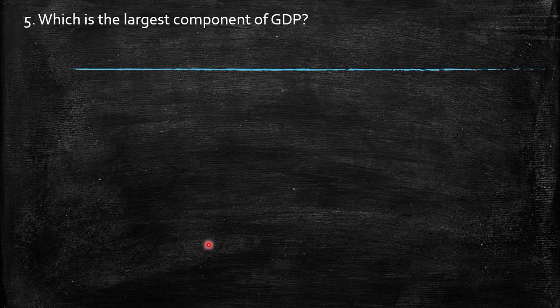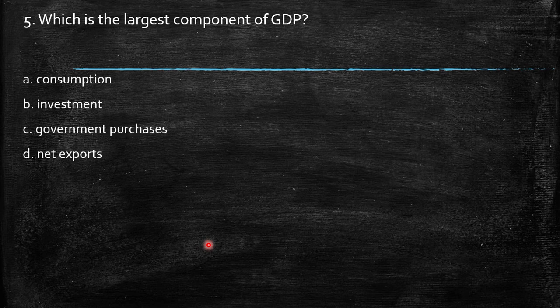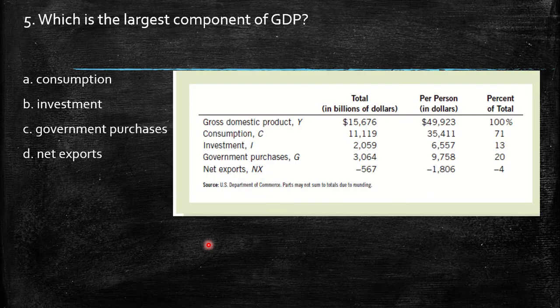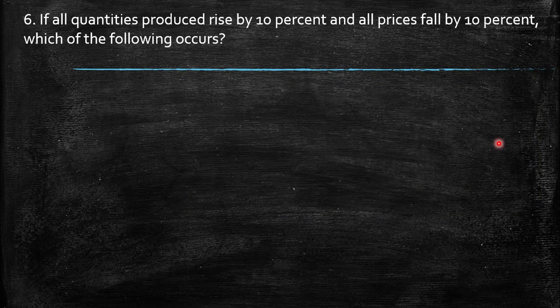Net exports fall because of the increase in imports, while GDP is unchanged due to the offsetting increase in consumption. Consumption is the largest component of GDP — the components being consumption, investment, government purchases, and net exports. For the United States in around 2012, consumption represented approximately 71 percent of GDP.